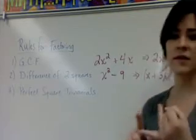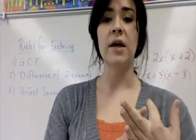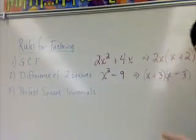So we've learned how to do GCF. We've learned how to do difference of two squares. And now we're going to look at what happens when we have perfect square trinomials. And they have a special form.